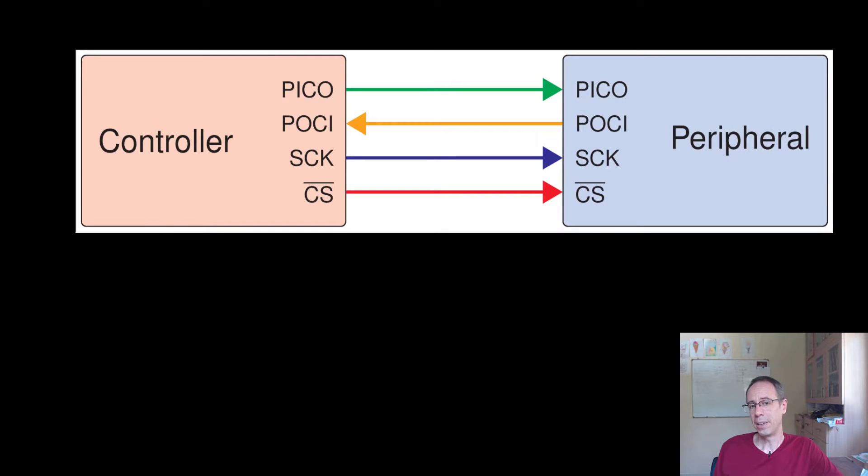SPI - there are different versions but the most common version is that we're having four lines. One line is called PICO, the other line POCI, and SCK and CS. PICO is peripheral in and controller out, so this is the signal line for data which we want to transfer.